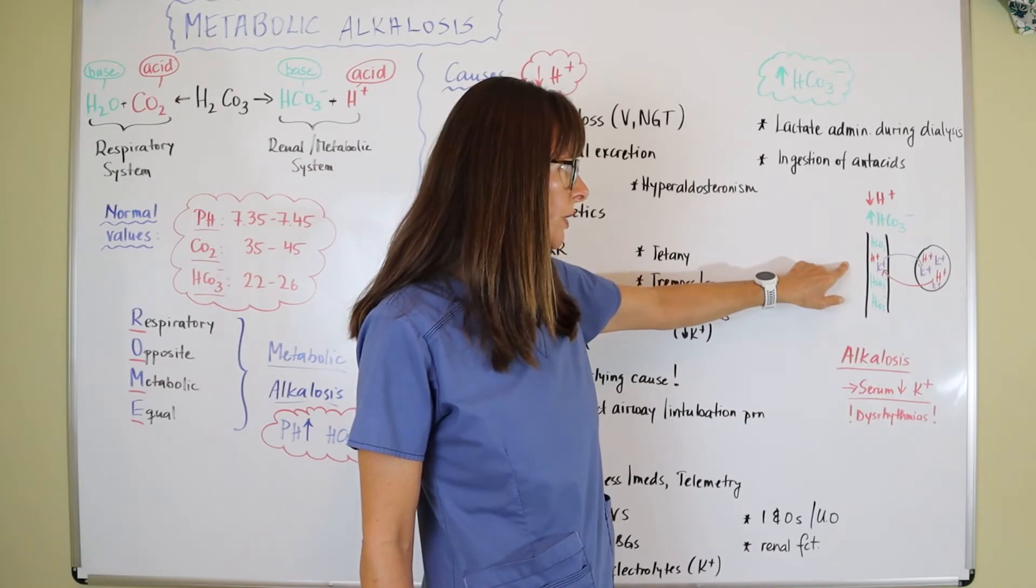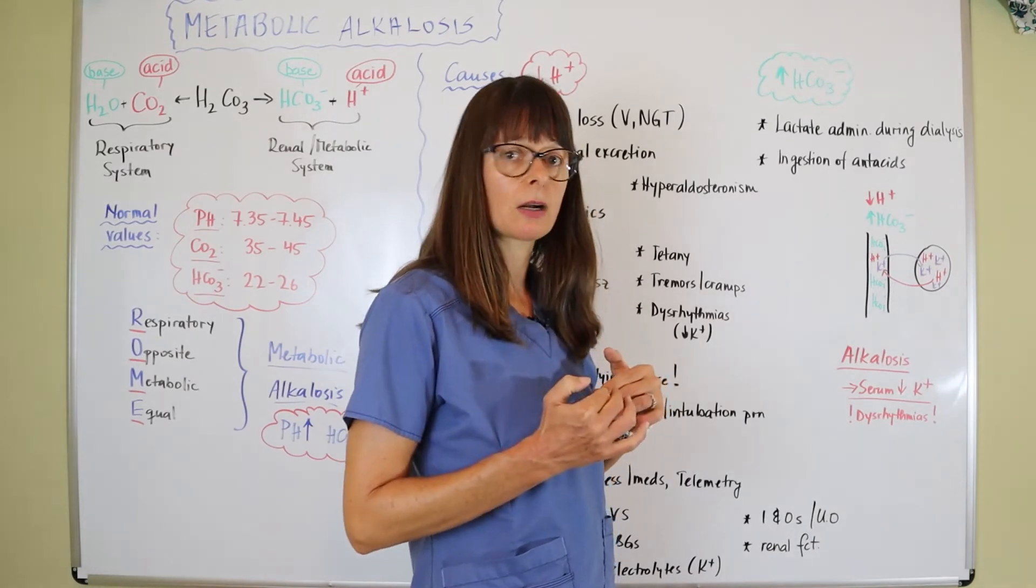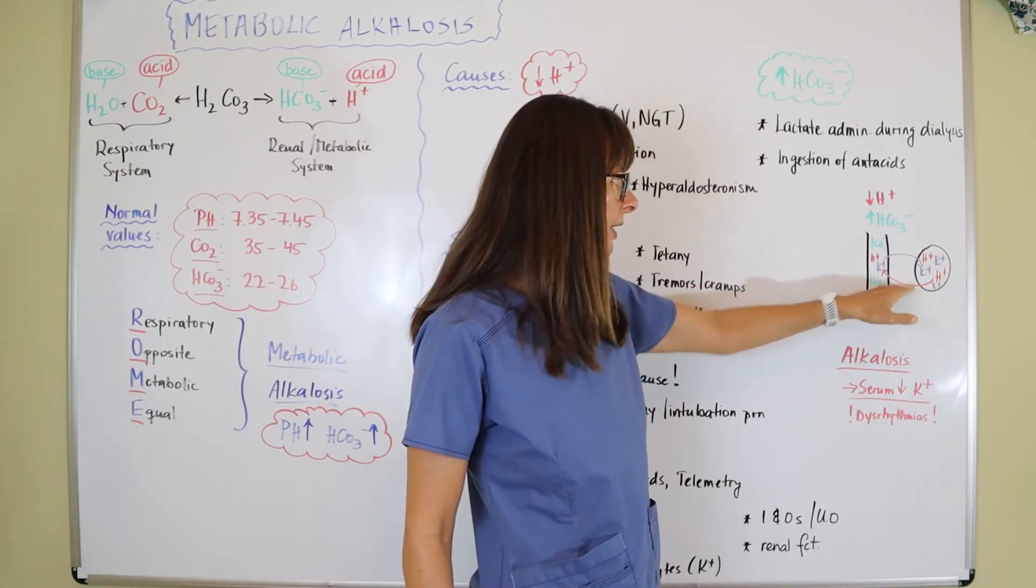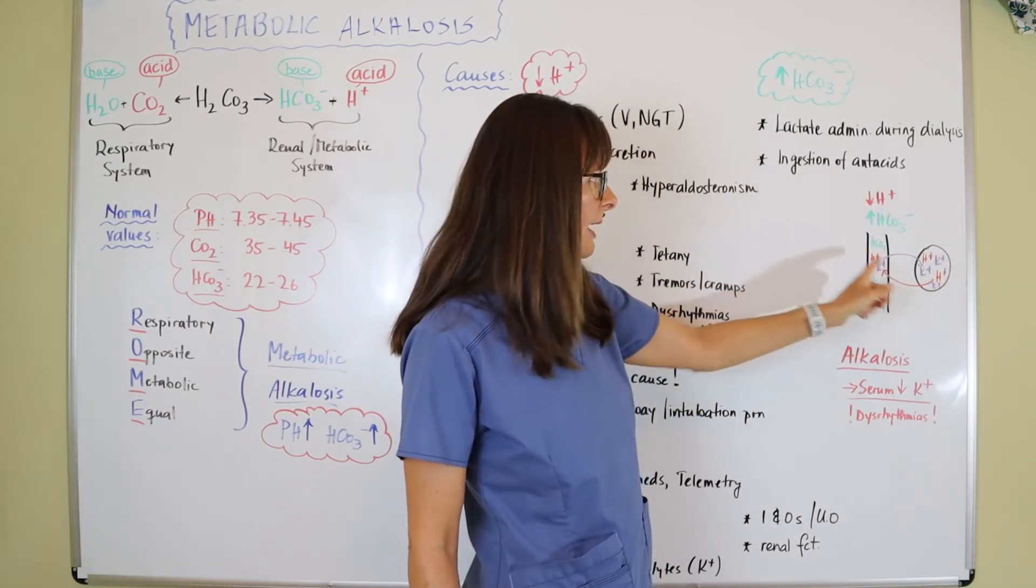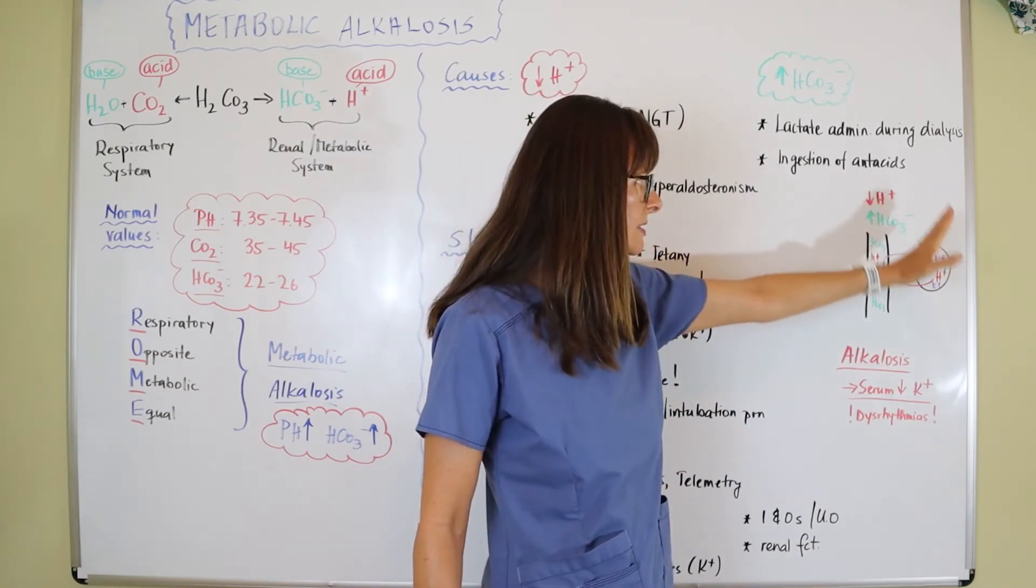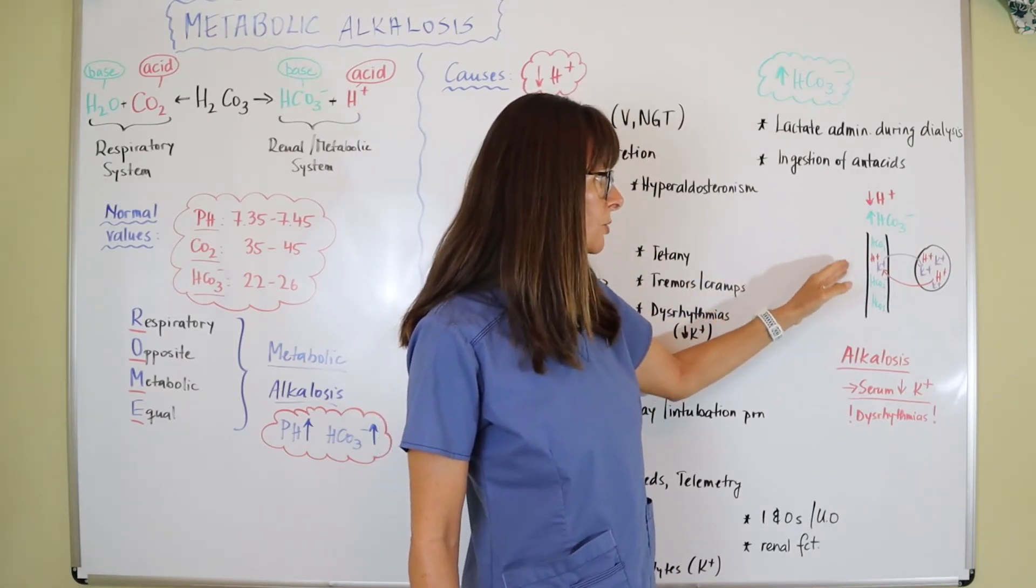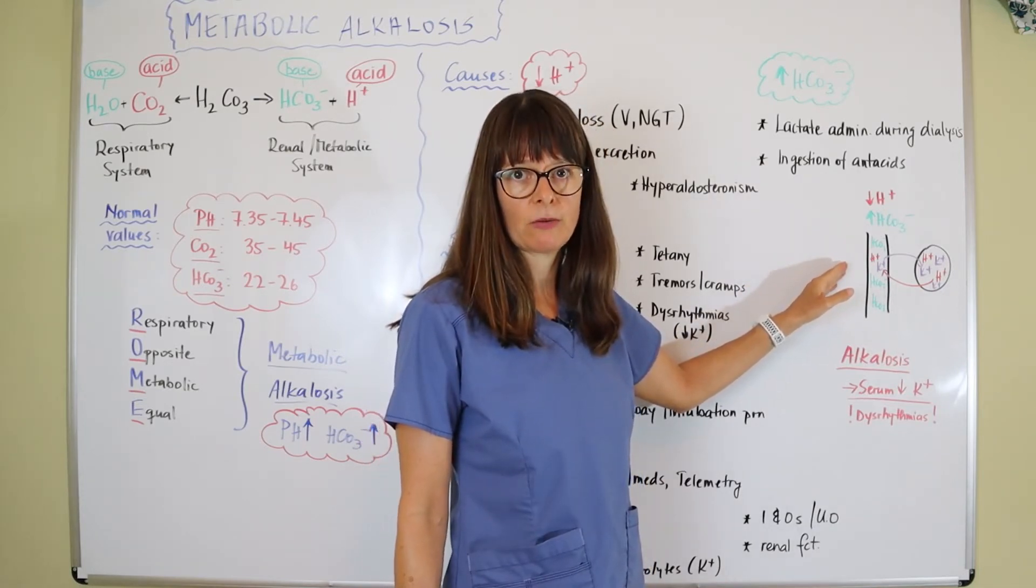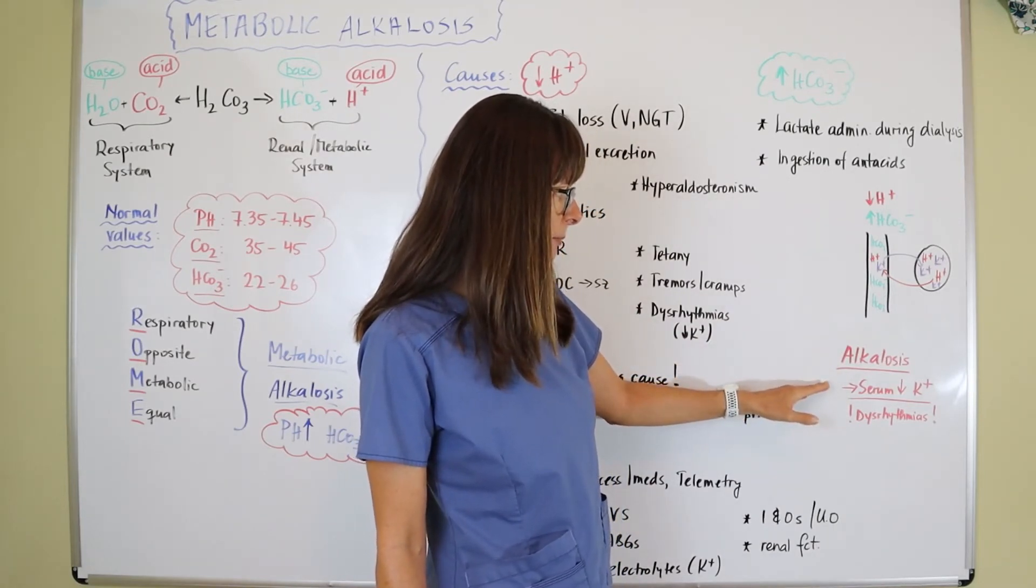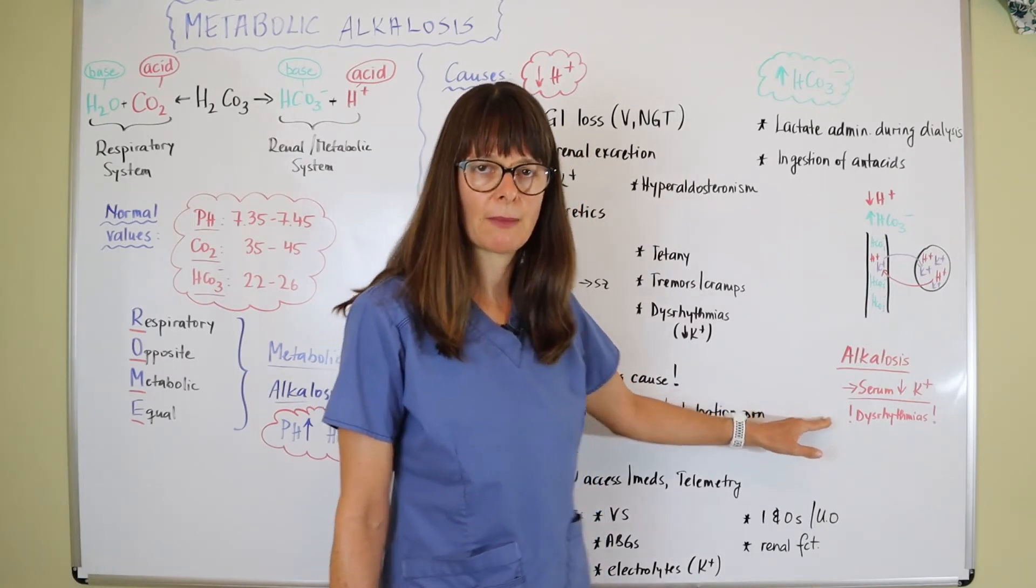What the body tries to do is get more hydrogen ion into the bloodstream to balance out this alkalotic state. But if we pull something out of the cell, which is the hydrogen ion, something else has to be moved into the cell, and in this case it's exchanged for potassium. So potassium moves into the cell, hydrogen ion comes out into the bloodstream, which leaves the patient's bloodstream with low potassium levels, hypokalemia. In an alkalotic state this leads to serum hypokalemia, and we always have to be aware of possible dysrhythmias when we have potassium imbalances.